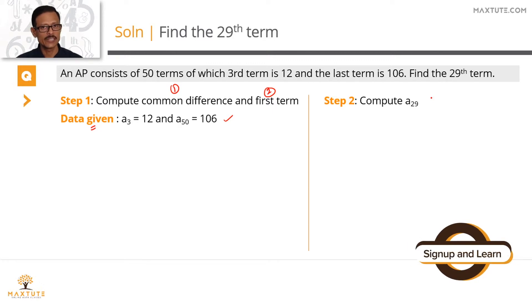The only formula that we need to know is the formula to compute the nth term of an AP. Nth term AN equals A, which is the first term, plus n minus 1 times D, where D is the common difference.